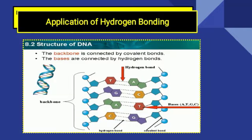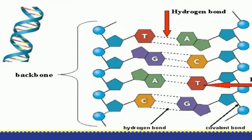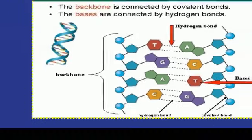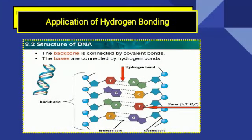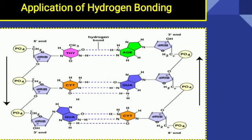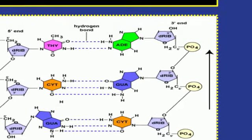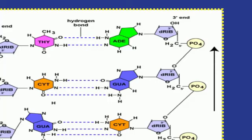Second application ki taraf hum badhte hain: structure of DNA. DNA ho ya RNA ho, inmen jo backbone hota hai woh covalent bond ki wajah se hota hai. Five carbon ring structure hai, jisme carbon ke five atoms mile hue hote hain. Iske saath phosphate group mojood hota hai, aur four structures ke andar nitrogenous bases hote hain. Yeh nitrogenous bases hain: adenine, cytosine, guanine, aur thymine. Aur jo RNA hai usmein thymine ki jagah uracil hogi.